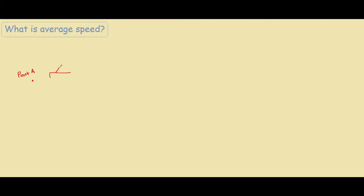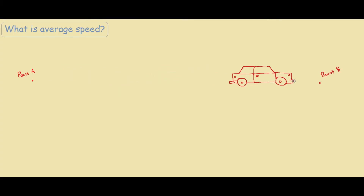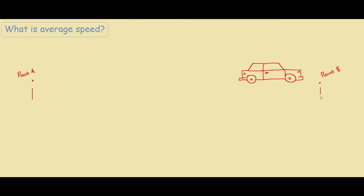So let's say we have this car over here at point A, and the car moves to point B over here. Let's say the distance from point A to point B was 200 kilometers, and the time taken to travel from point A to point B was two and a half hours.